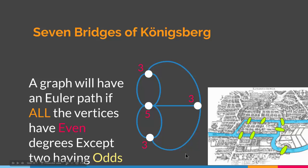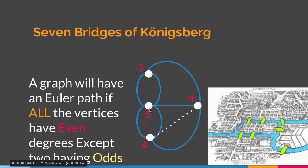However, we can have a solution if we add an edge to the graph. If we add an edge between this vertex and this vertex — meaning we add a bridge between this piece of land and this piece of land — then all the vertices in the graph have even degrees except two of them having odd degrees. This one and this one have even degrees, and this one and this one have odd degrees. If the bridges of Königsberg became eight with this addition, we would have an Eulerian path that goes through the city and walks through all the bridges exactly once.